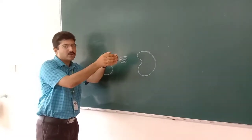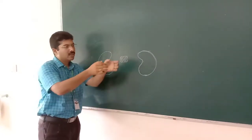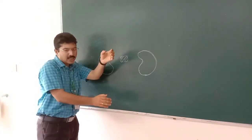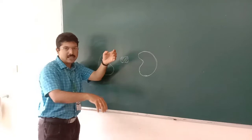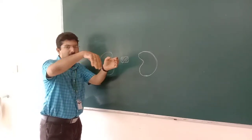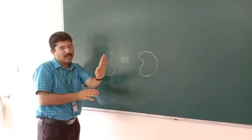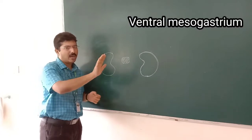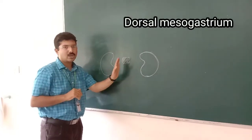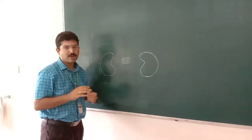The gut consists of foregut, midgut, and hindgut. After the region of the foregut, the peritoneal folds that connect the gut to the anterior abdominal wall will disappear, so that only the foregut region will have a connection to the anterior abdominal wall. From here onwards we call this anterior connection the ventral mesogastrium and the posterior connection the dorsal mesogastrium. We will discuss further details with the help of a model.